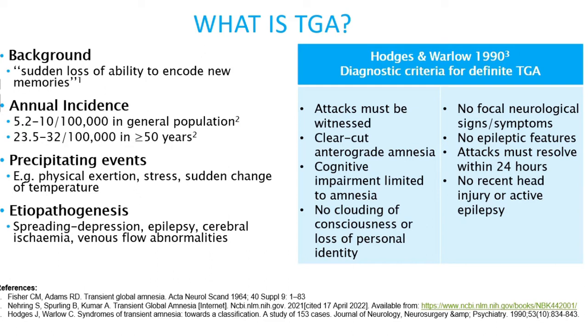In some cases, episodes of TGA may have an identifiable trigger or event that precedes it. Physical exertion is the most common trigger, followed by emotional stress and sudden changes of body temperature.